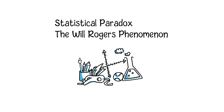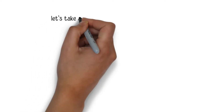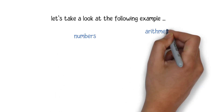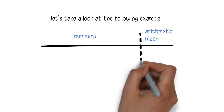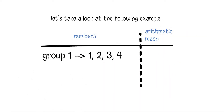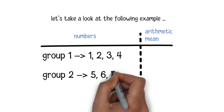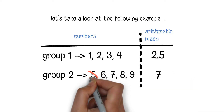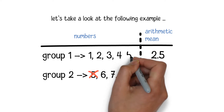Before we discuss today's topic, let's take a look at the following example. There are two groups of numbers. The first group contains numbers one to four and the second group contains numbers five to nine. The arithmetic mean of the first group is 2.5 and the arithmetic mean of the second group is seven.